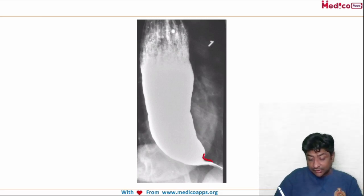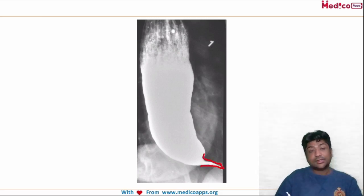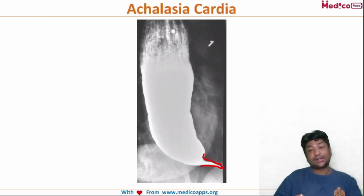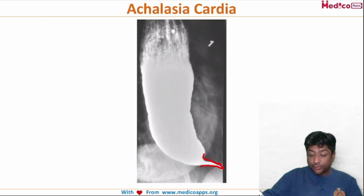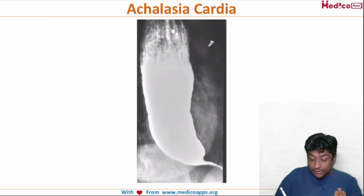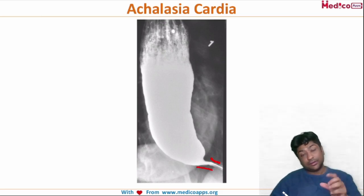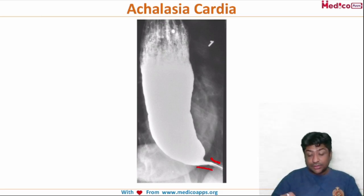Next, a history of dysphagia will be given again, and here you can see at the lower end the esophagus narrows into a bird beak appearance. This is your achalasia cardia. I would like to point out that if you look here, there is no filling defect.